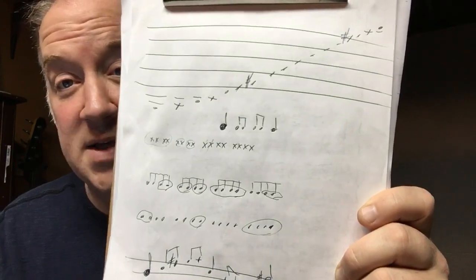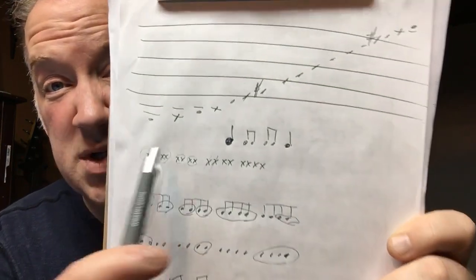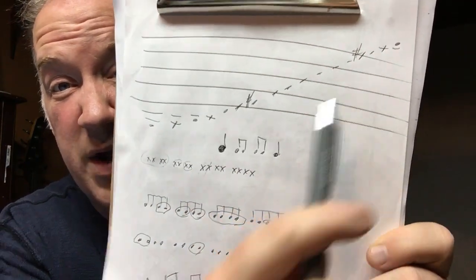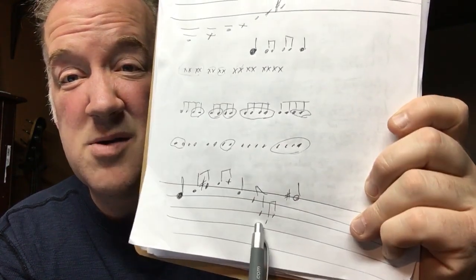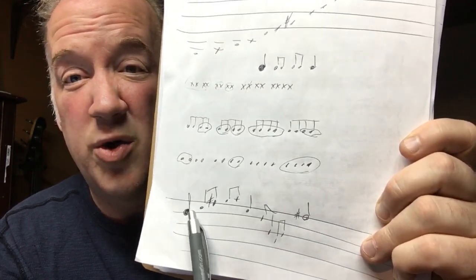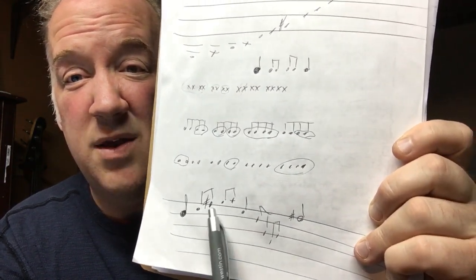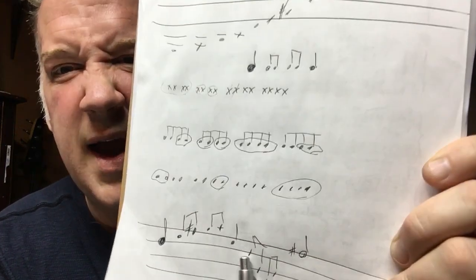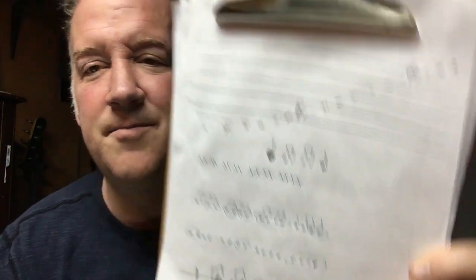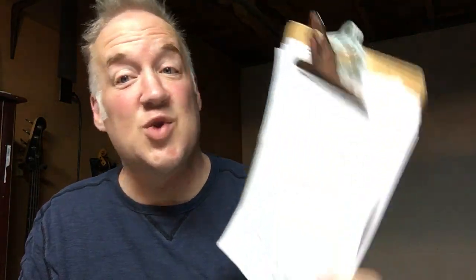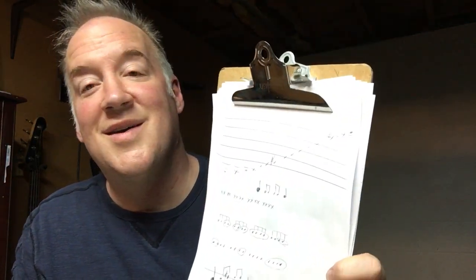Or you could combine this with the next step, which is to assign notes from the G major scale randomly to each of these rhythms, and then put them down here. So this would be: quarter, eighth, eighth, eighth, eighth, quarter, eighth, eighth, eighth, half. That's what I'd like for you to do — just write out four phrases like that. That's the assignment.